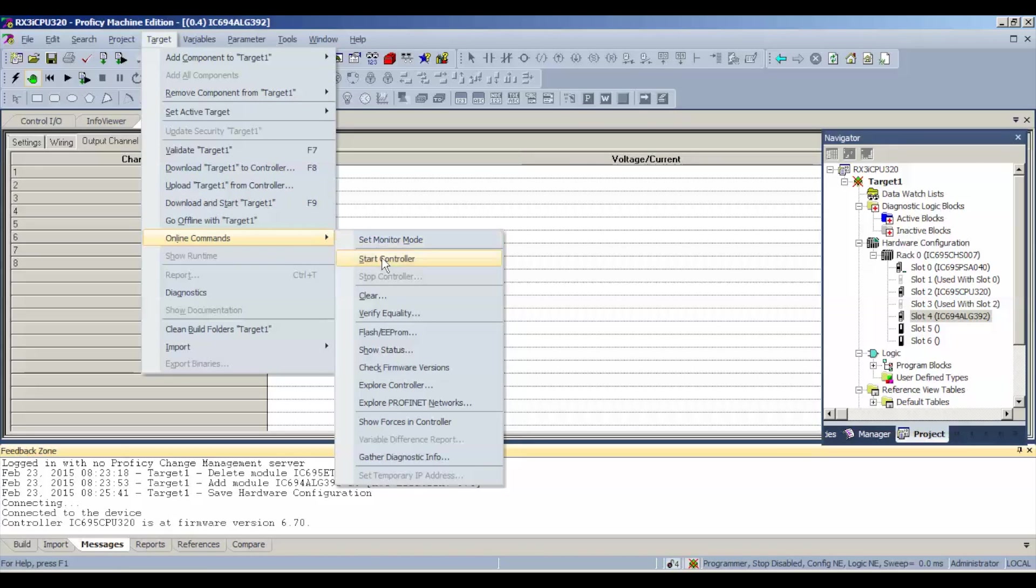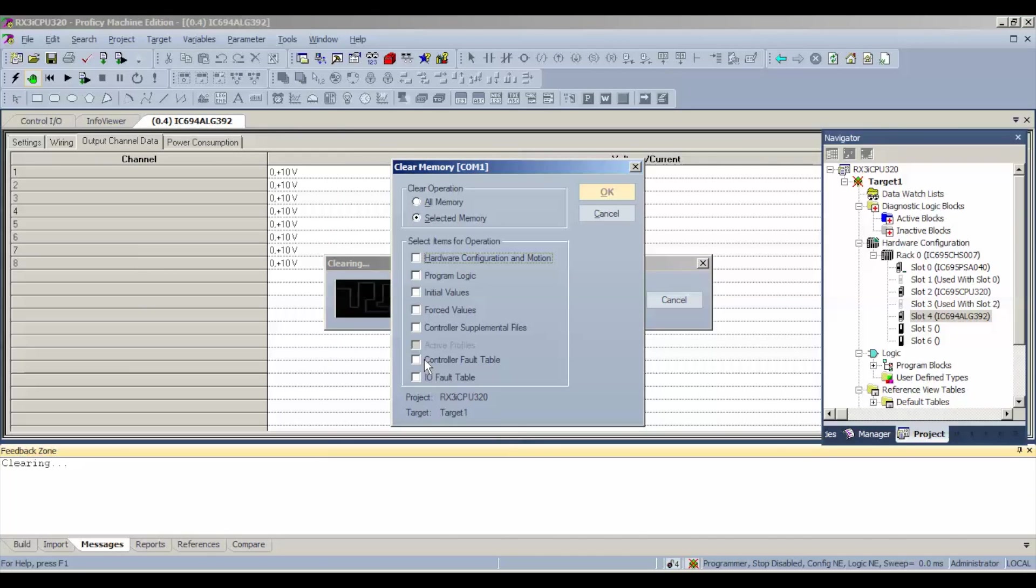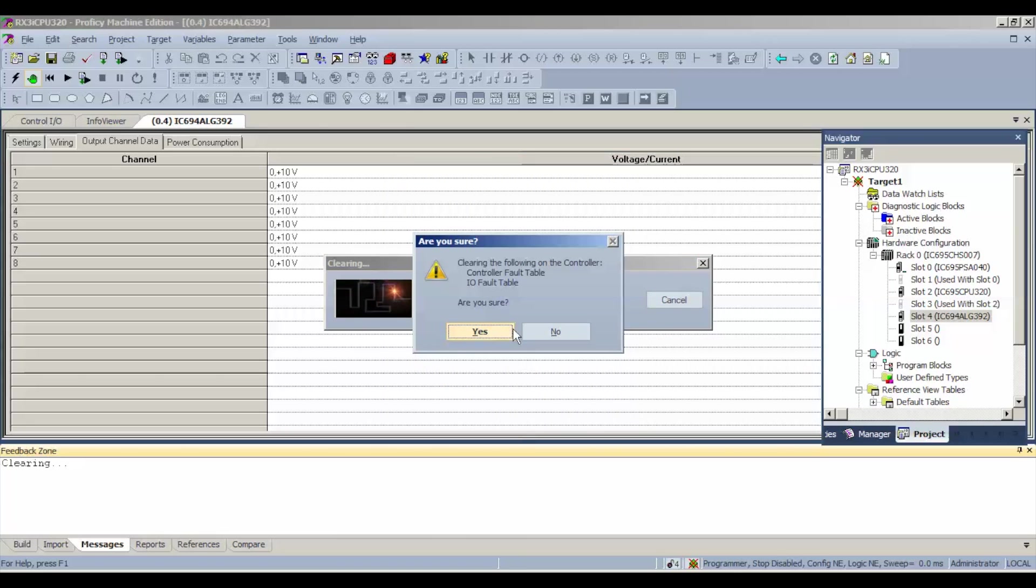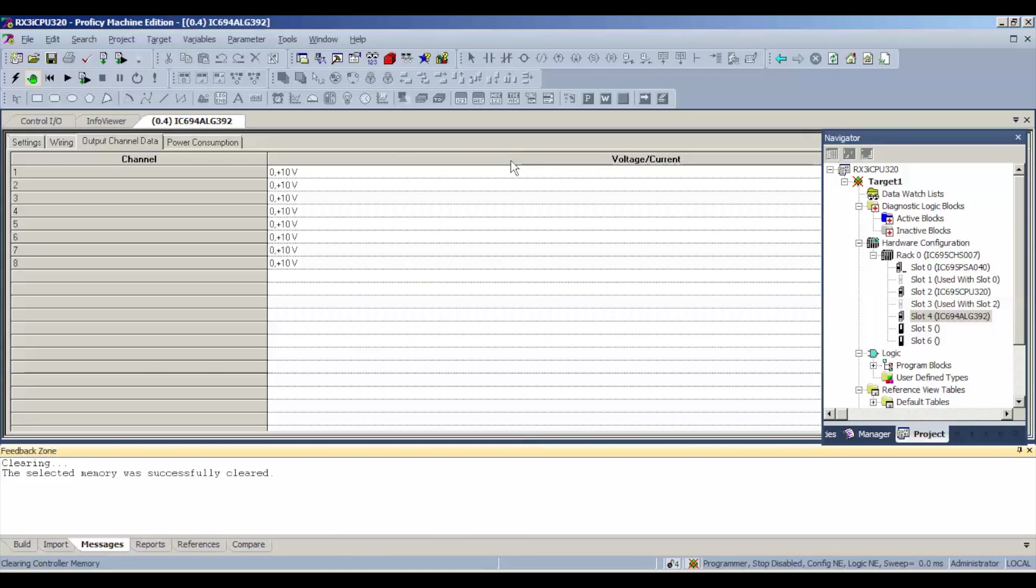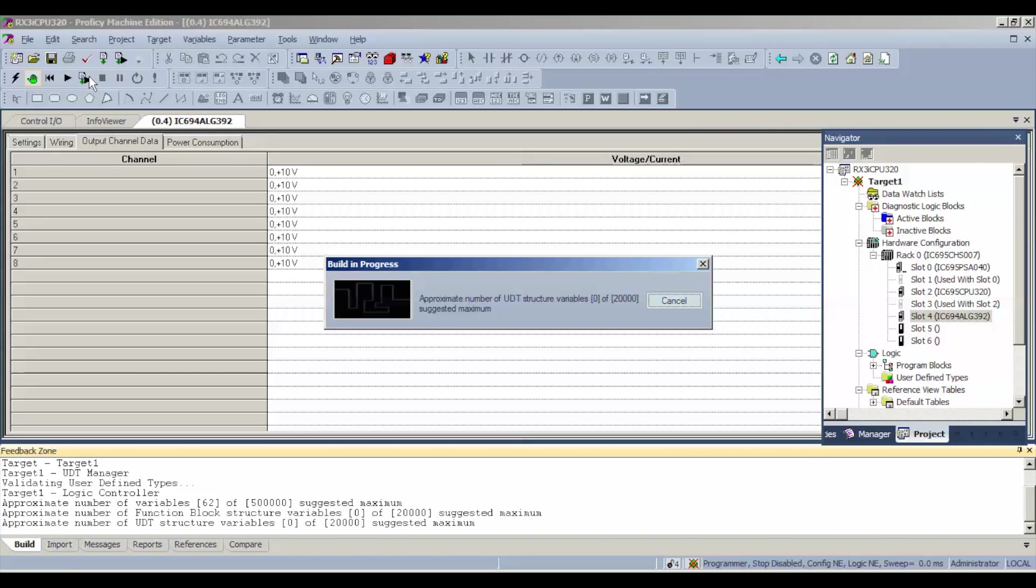For that reason, we're going to go to target, online commands, clear. What I want to clear is the controller fault and I.O. tables, I.O. fault table. You don't need to clear all memory or any other force values or anything like that. Just these two. That's going to keep us from getting hung up when we go to download this simple procedure that we're doing here and get it into run mode.